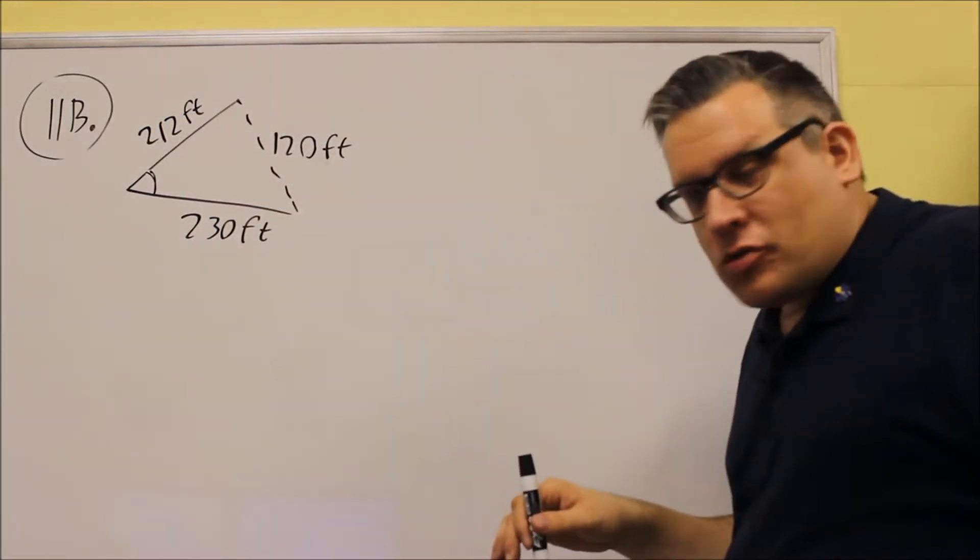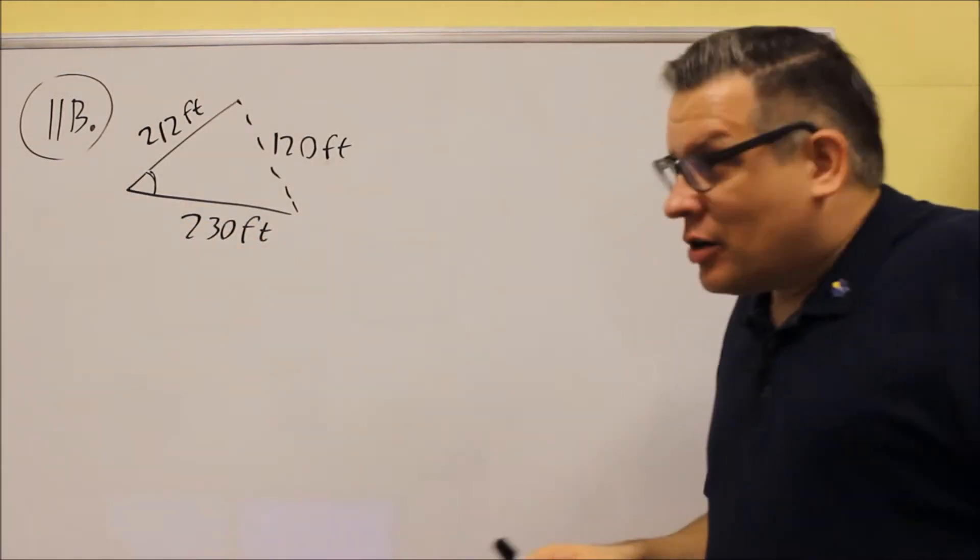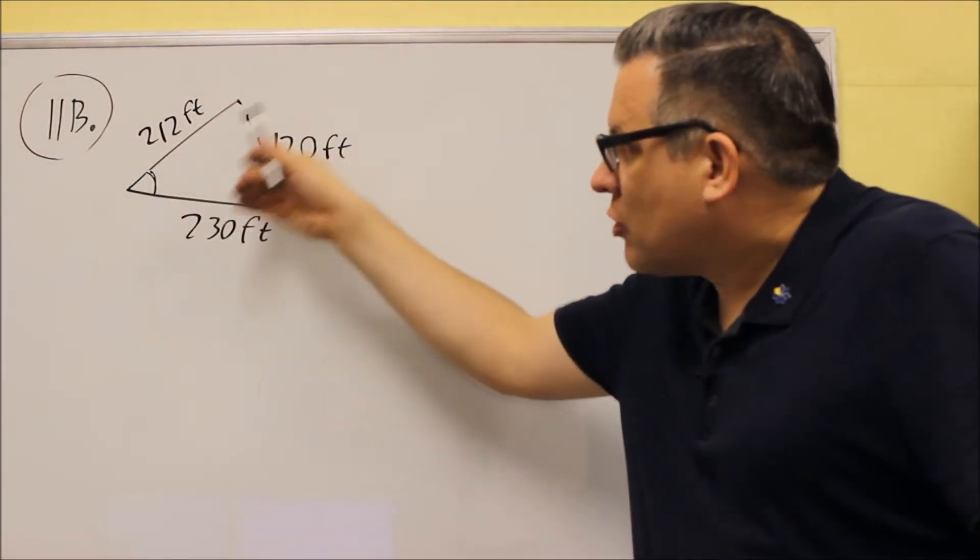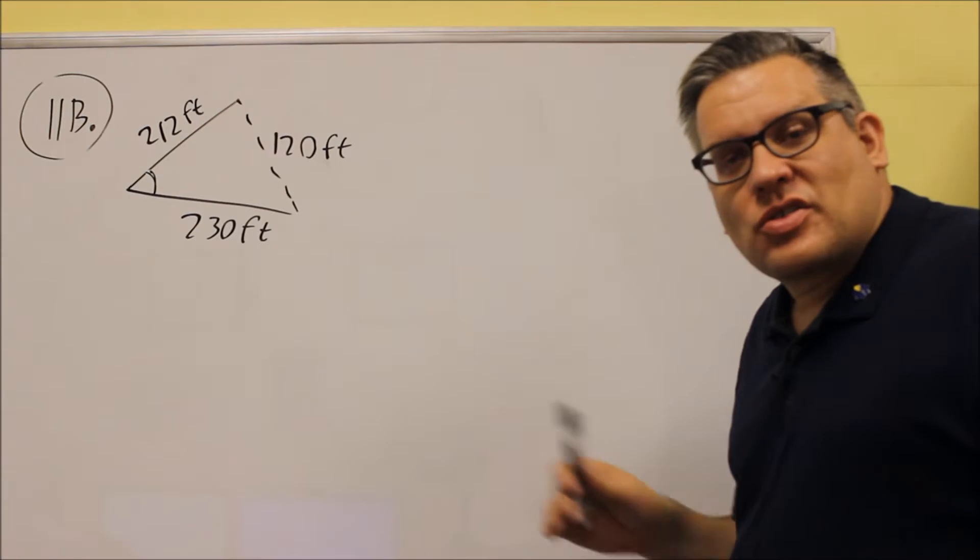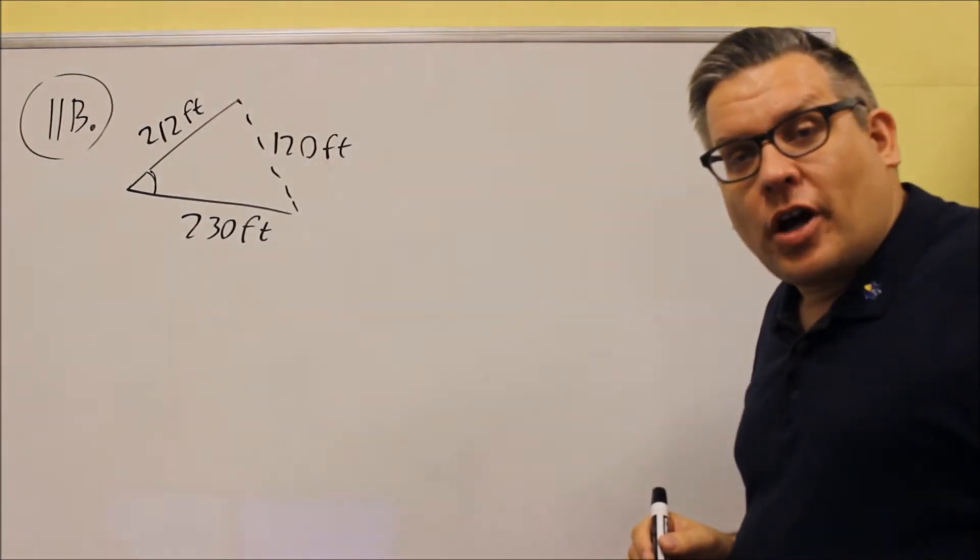They want to know the angle between the two cables that's connected to the barge, and that would be this here, because the cables are only represented by the solid lines. The dotted line would be how far apart they are.